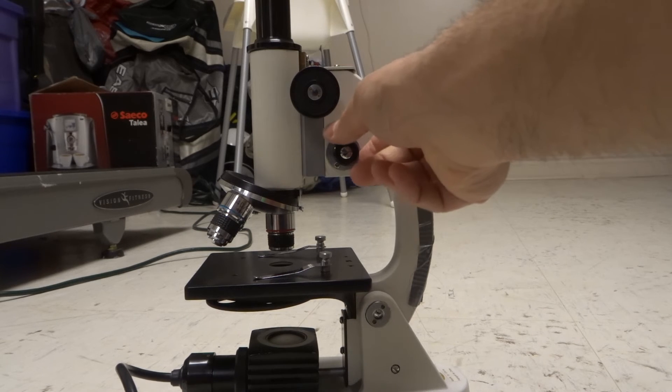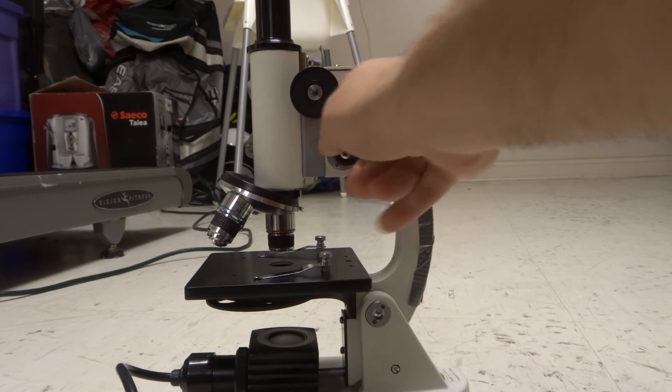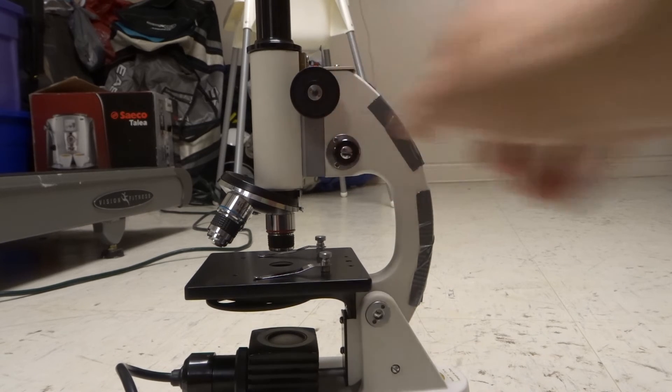Once you're at that stage, then you can go with the fine adjustment knob and you can then turn this and get even more clarity. So you want to get it even more clear.